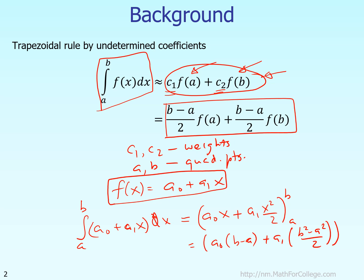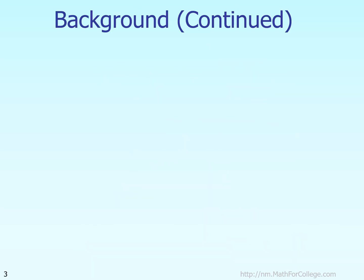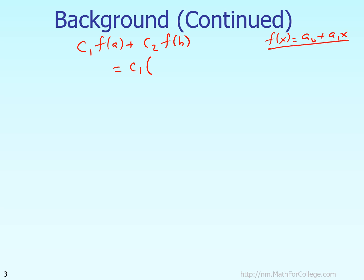Using the formula with C1 times f(A) plus C2 times f(B), and substituting our function f(x) = A-naught plus A1·x, we get C1 times (A-naught plus A1·A) plus C2 times (A-naught plus A1·B). This is what we get from the formula, and we want it to equal the exact integration result.